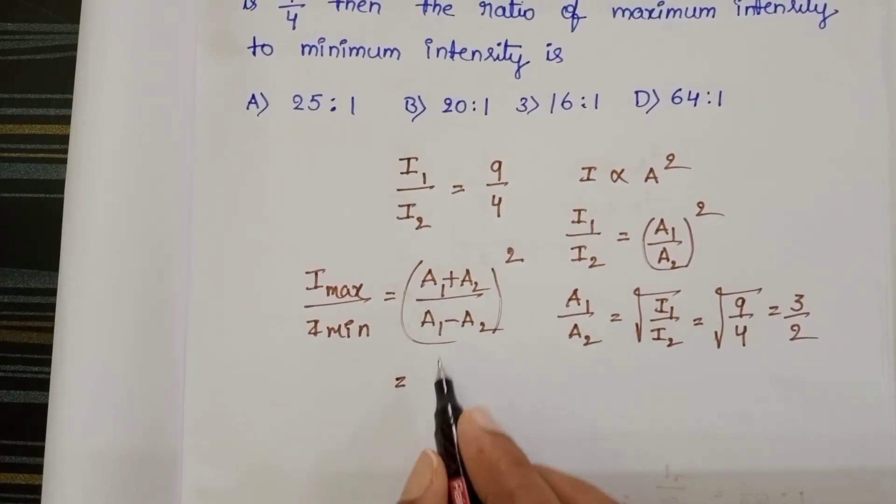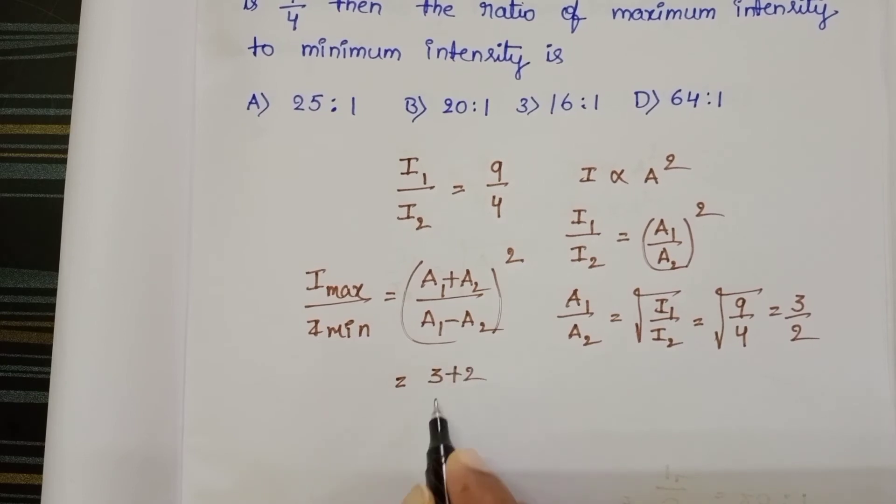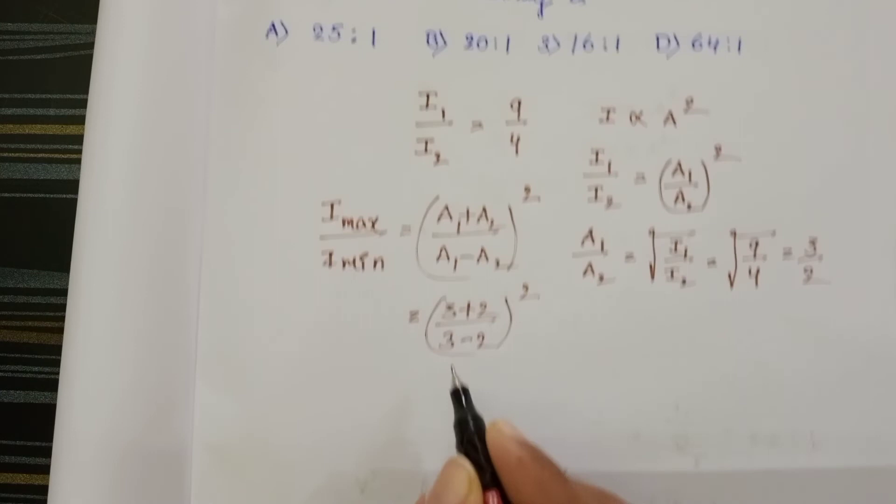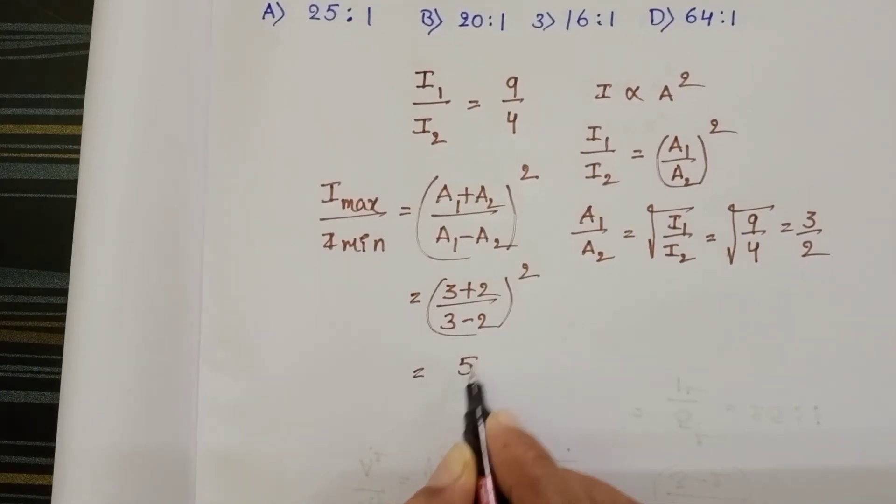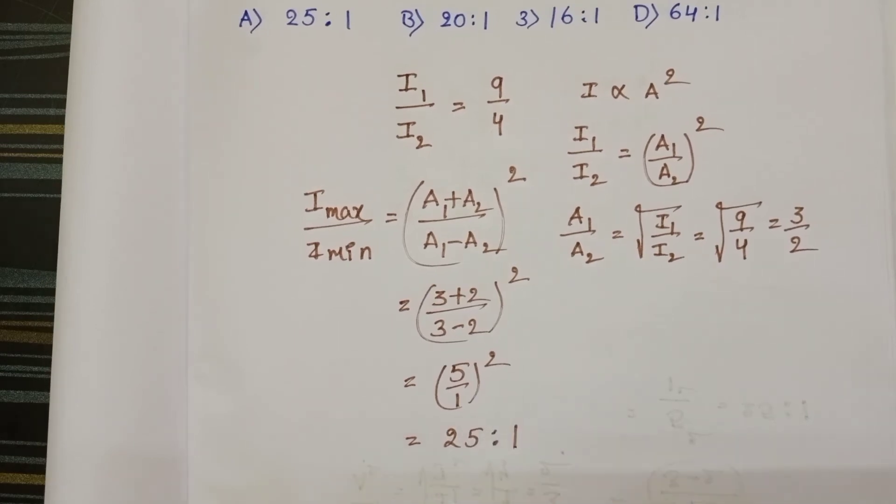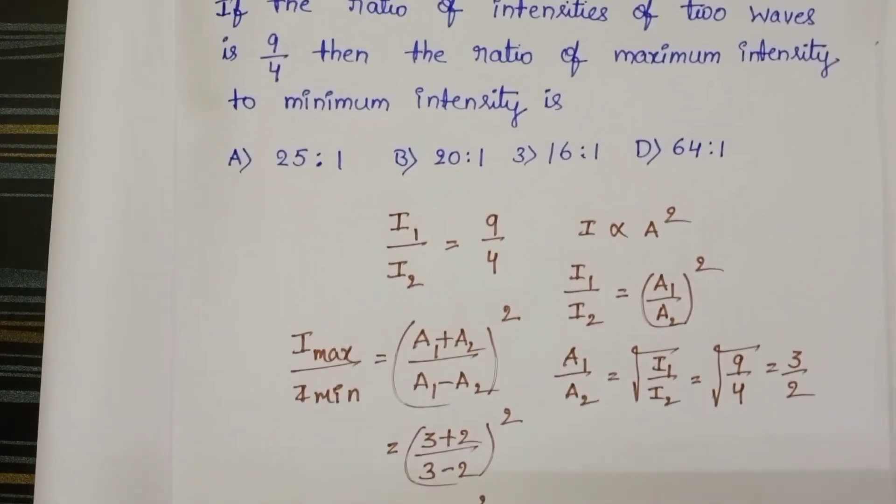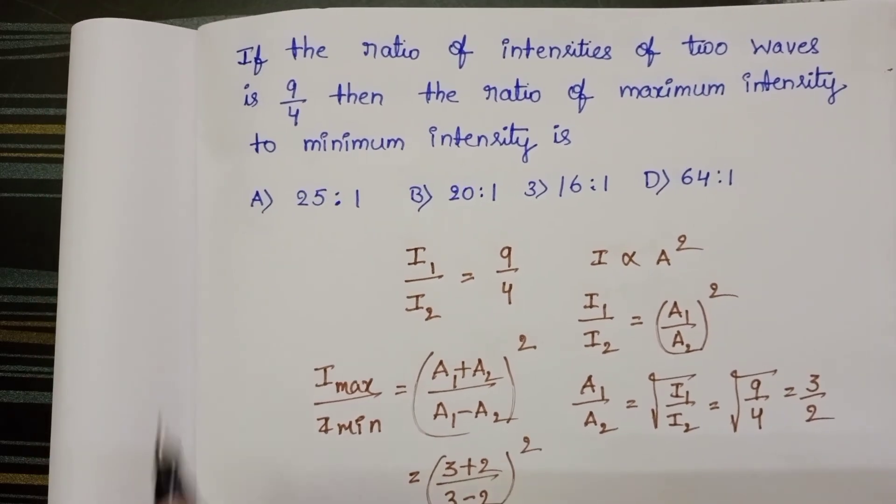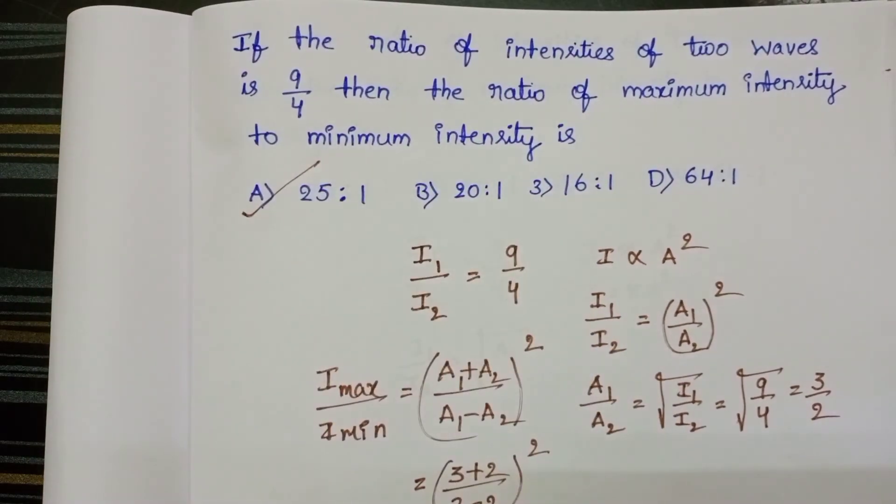So, 3 plus 2 by 3 minus 2 whole square equals 5 by 1 whole square, that is 25 to 1. The ratio of maximum to minimum intensity equals 25 to 1. First option is correct.